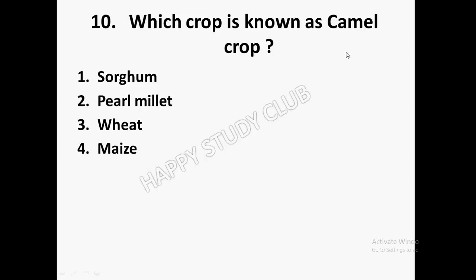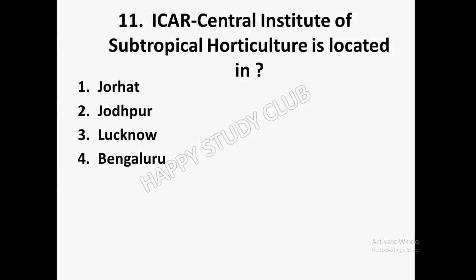Next: Which crop is known as the camel crop — sorghum, pearl millet, wheat, or maize? The answer is pearl millet. India is the largest producer of pearl millet, and Rajasthan is the highest producing state in India.